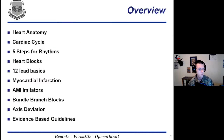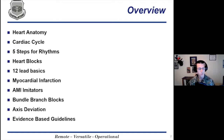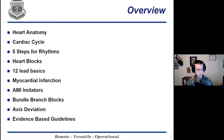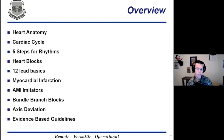So we'll jump right in. Today we're going to talk about heart anatomy, the conduction system and coronary arteries, the cardiac cycle, a consistent way to go over rhythms — five steps to look at your rhythms — heart blocks, 12 leads and locations consistent with myocardial infarctions, things that can imitate heart attacks, bundle branch blocks, axis deviation, and evidence-based guidelines. Some new things have come out about 12 leads over the years and some of that is pretty awesome.